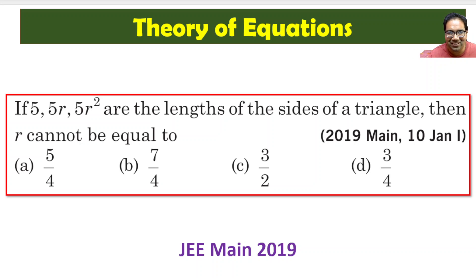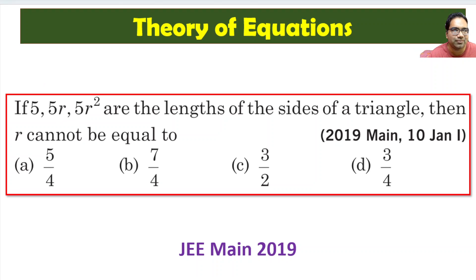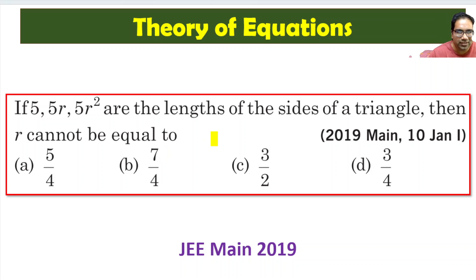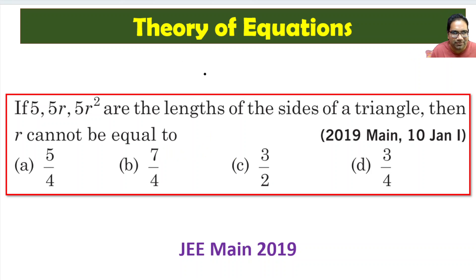Hi friends, here is a beautiful problem. We are given 5, 5r, and 5r² — these three are the lengths of the sides of a triangle: 5, 5r, 5r². Then r cannot be equal to what?